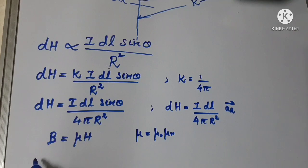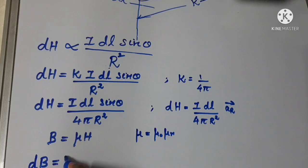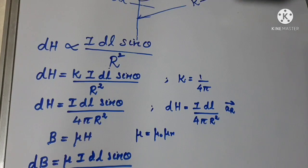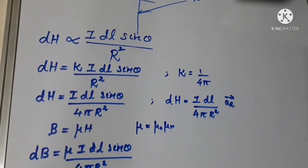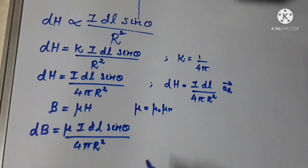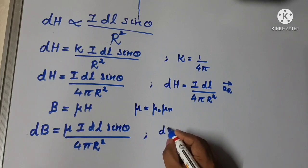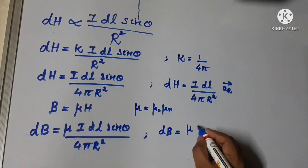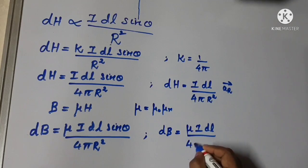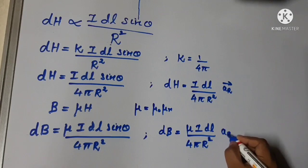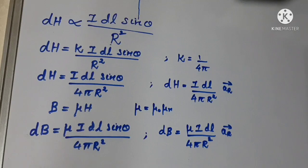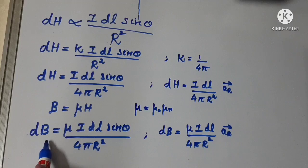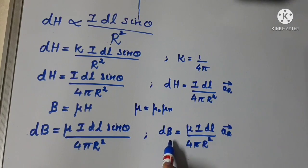Using this relation, the differential magnetic flux density dB is equal to μ I dL sin(theta) divided by 4π R squared. In vector form, dB is equal to μ I dL sin(theta) divided by 4π R squared times aR vector. This is the magnitude value and this is the vector representation for differential magnetic flux density.